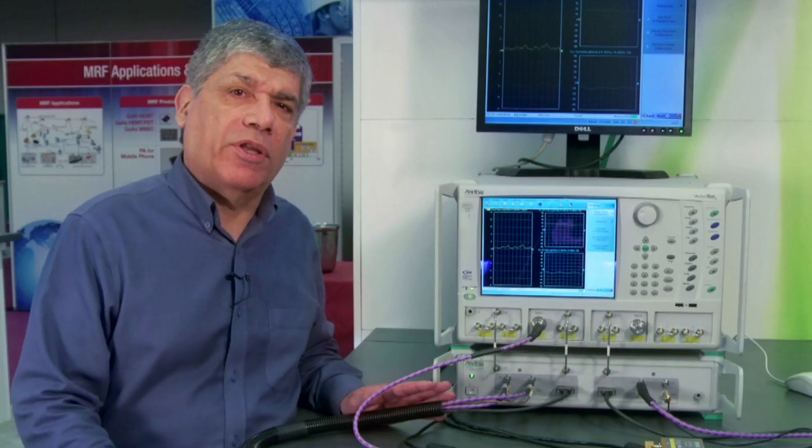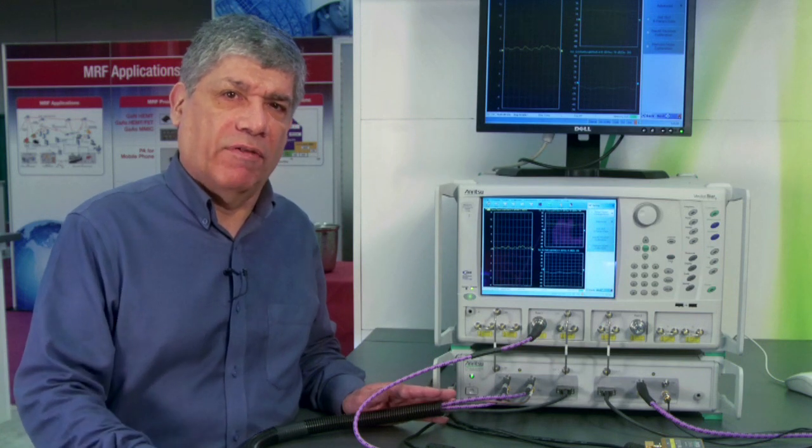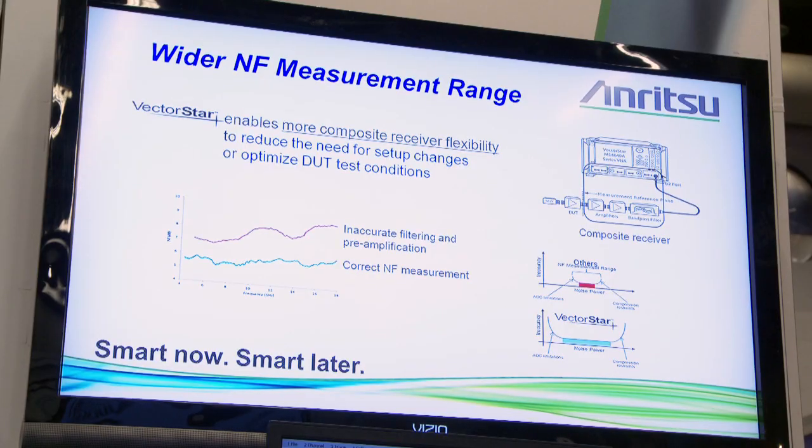But in this case, we would not use the standard millimeter-wave modules because the couplers would degrade the noise figure performance of the receiver. So what we've done for people making measurements at frequencies that work all the way up to 125 gigahertz is the millimeter-wave modules have been configured for direct access to the samplers inside the module.